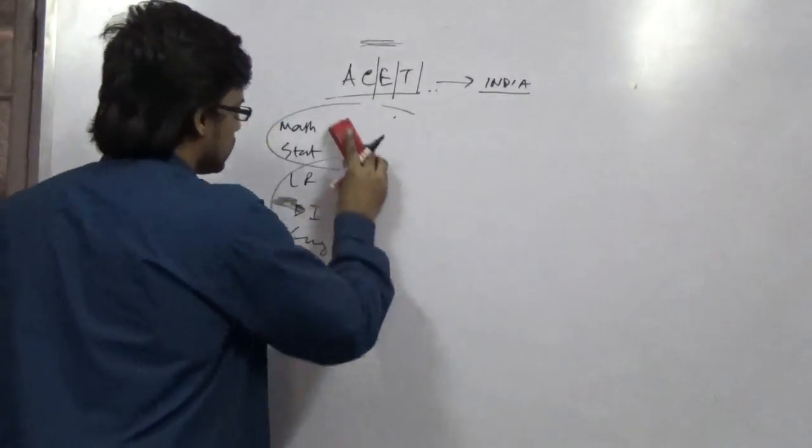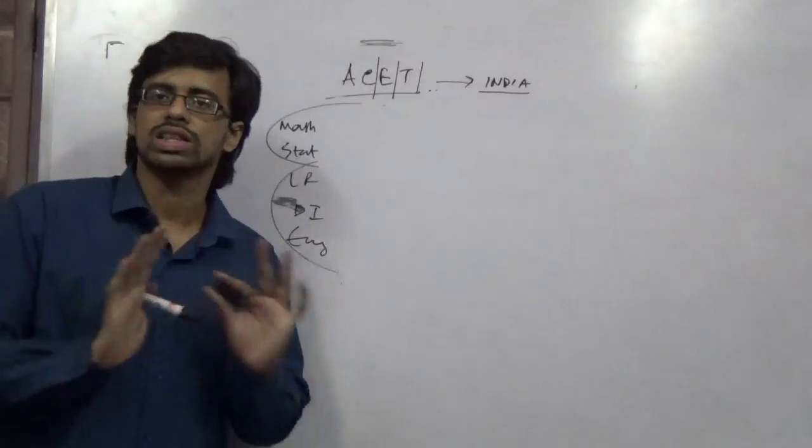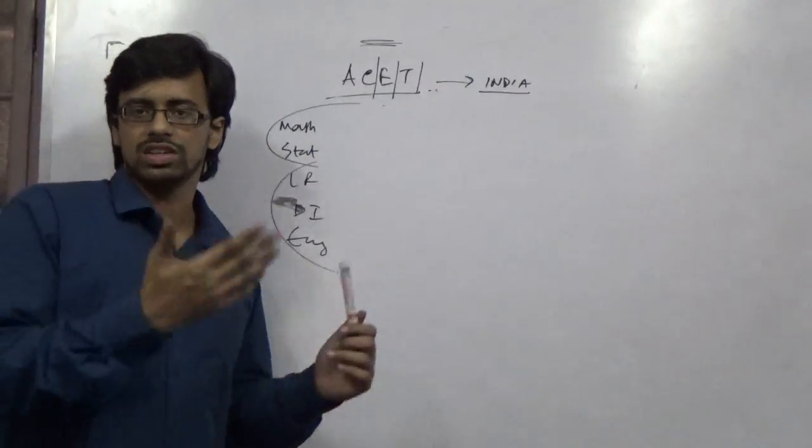So they don't maintain the exact percentage pattern. For ASET we are doing it like this. So what are these subjects? Mathematics has the complete syllabus of class 11, 12, only nothing beyond.